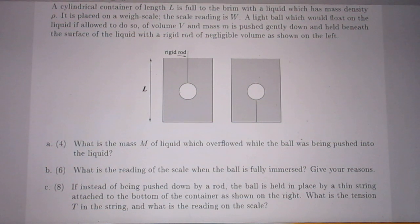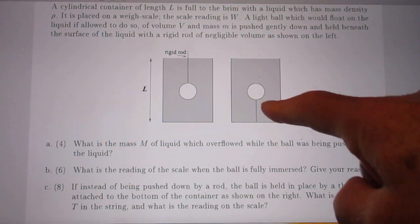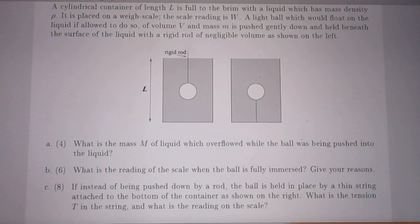Third question: Instead of being pushed down by a rod, the ball is held in place by a thin string, look here, attached to the bottom of the container as shown on the right. What is the tension T in the string and what is the reading on the scale?